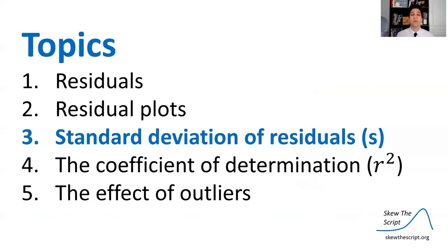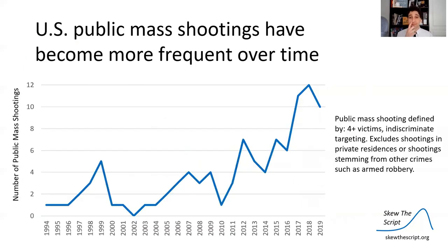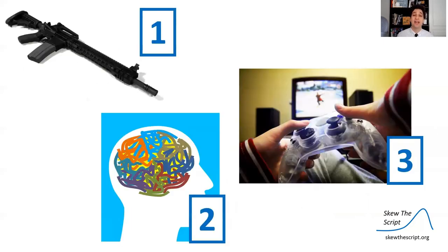So let's talk about one metric for measuring these residuals, which is the standard deviation of residuals. We've noticed that public mass shootings have become more frequent over time.